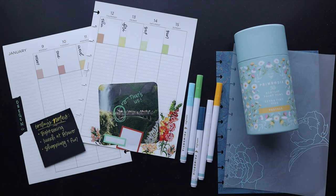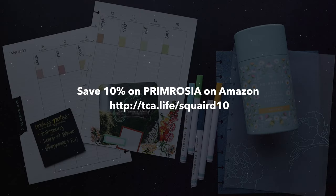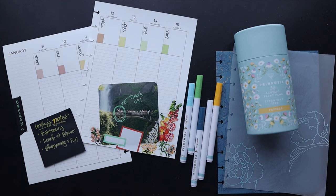And there you have it you guys creative ways to use acrylic paint pens in your planner or journal. Thanks again to Primrosea for sponsoring this video. Be sure to check them out over on Amazon and save 10% on your order using the link below in the description and that's going to do it friends. So I hope you enjoyed this video.